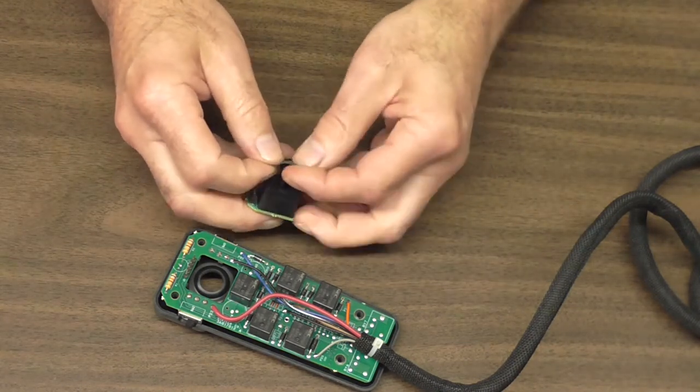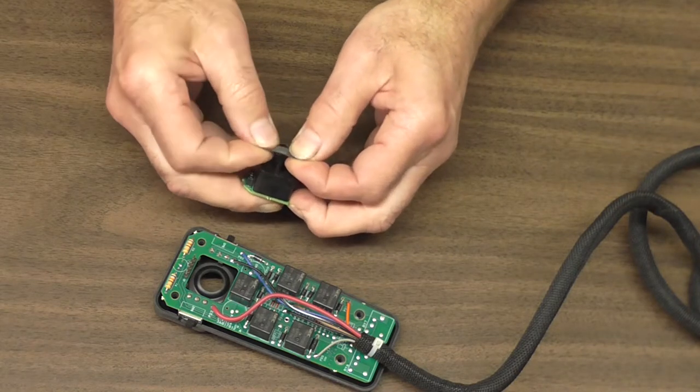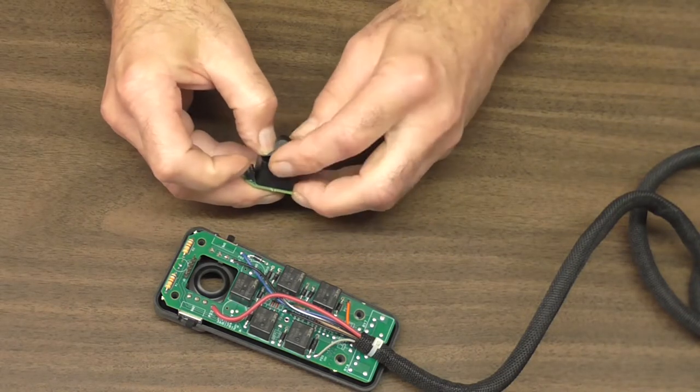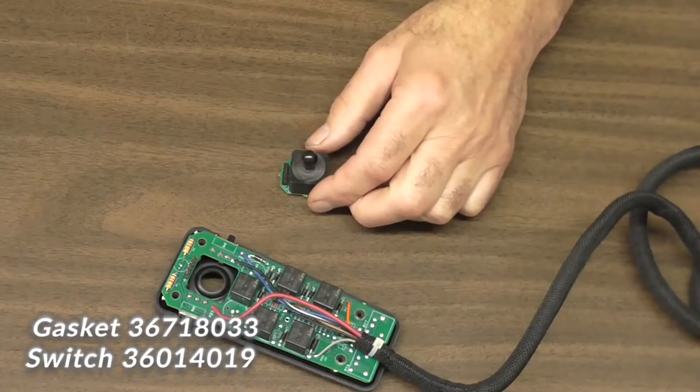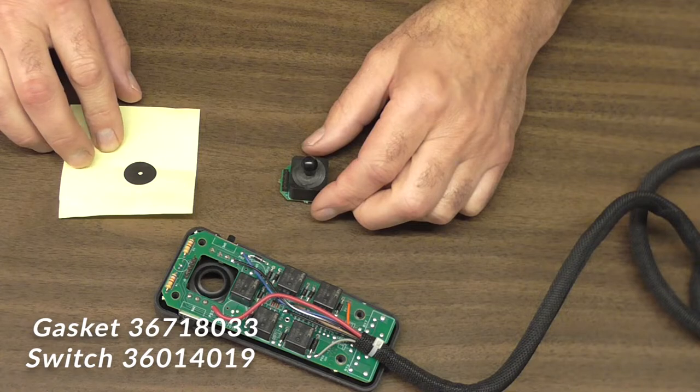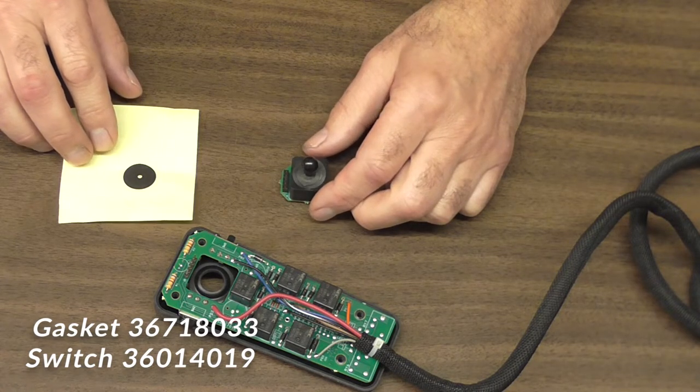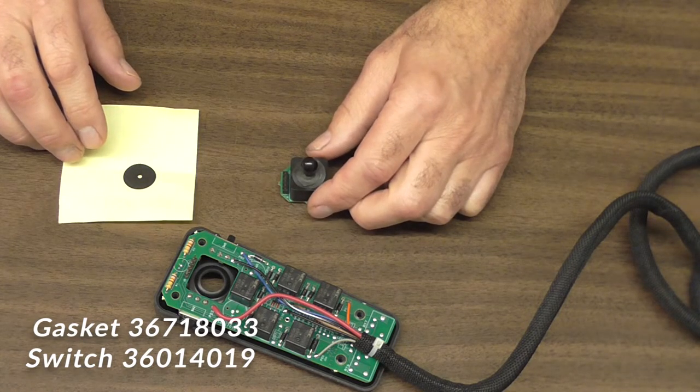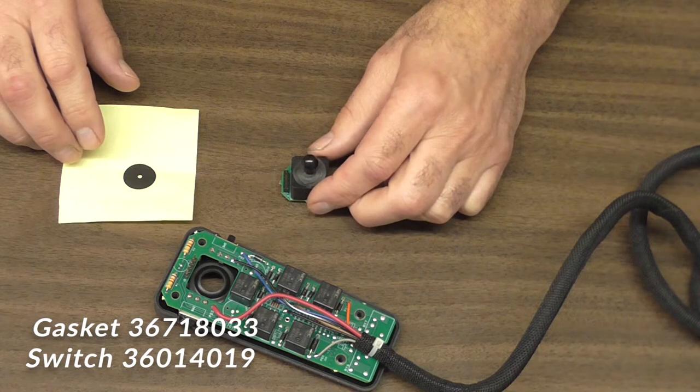Make sure you reassemble the little diaphragm gasket in it. The diaphragm gasket is replaceable. It is part number 36718033. The replacement switch is part number 36014019.